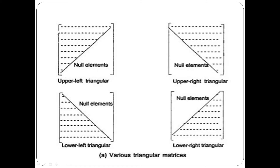In one square matrix, this particular part has elements non-zero and remaining elements zero — it is a lower left triangular matrix. In another square matrix, this particular area of elements is non-zero and remaining elements zero — it is called upper right triangular matrix. In another square matrix, this particular area of elements is non-zero and remaining elements zero — it is called lower right triangular.